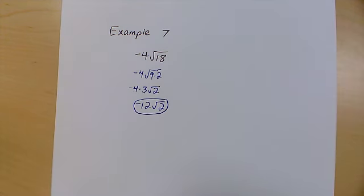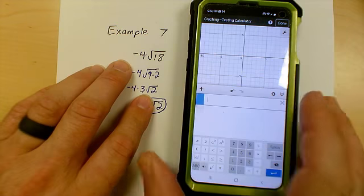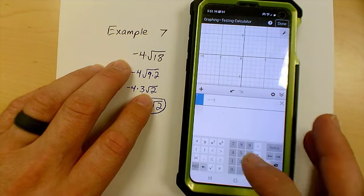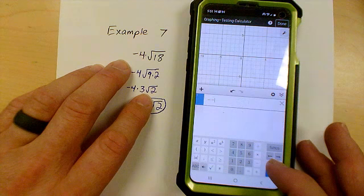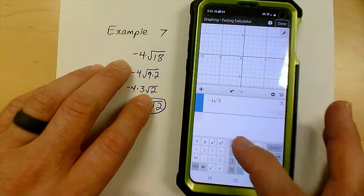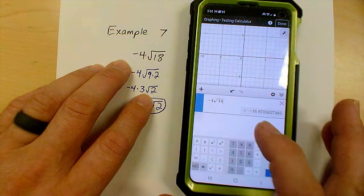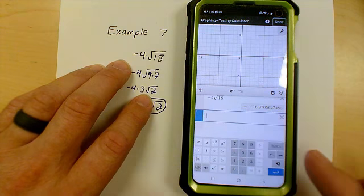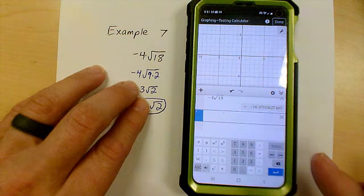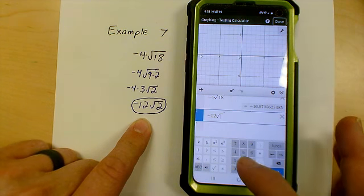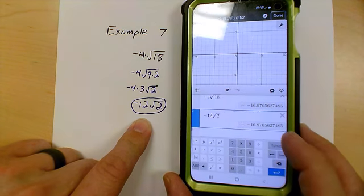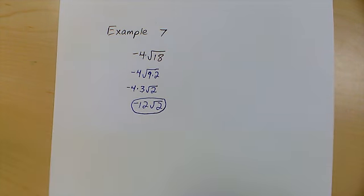These can be checked as well with the calculator. So, if you're struggling with them on multiple choice, please remember this. So, if I type in the original problem negative 4 times the root of 18 and I tap into another box and I see negative 16.97 and I type in my answer negative 12 times the square root of 2 negative 16.97. I know that I've actually done this problem correctly. If there's questions, please let me know through email. Thank you very much.